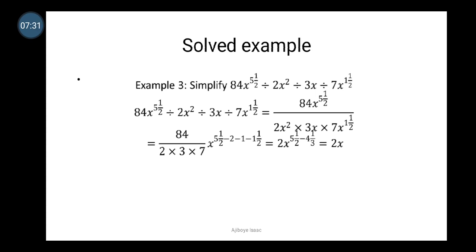Solution: we have 84 divided by (2 times 3 times 7), then x raised to power 5½ minus the sum of the other x powers. Subtracting using directed numbers: 5½ minus 2 is 3½, then 3½ minus 1 is 2½, and 2½ minus 1½ is 1. Equivalently, 5½ minus 4½ gives 1, so the final answer is 2x — that is, 2x raised to power 1.